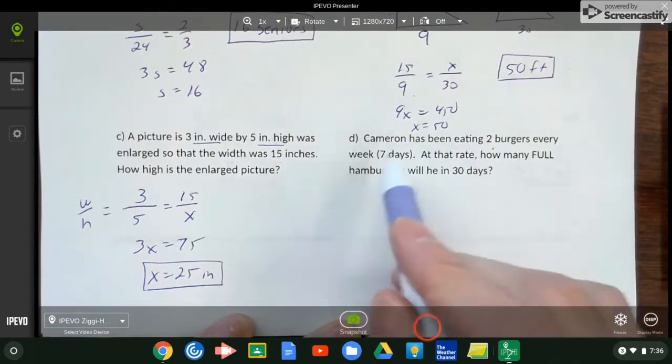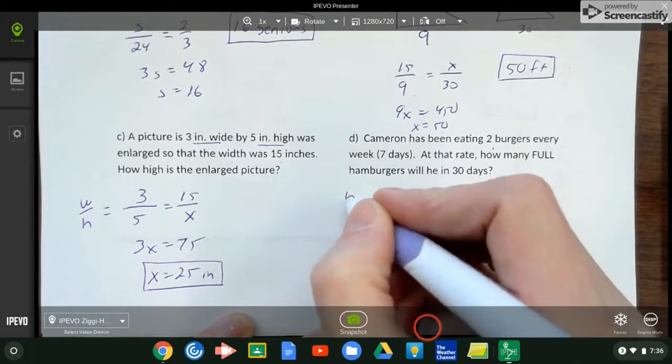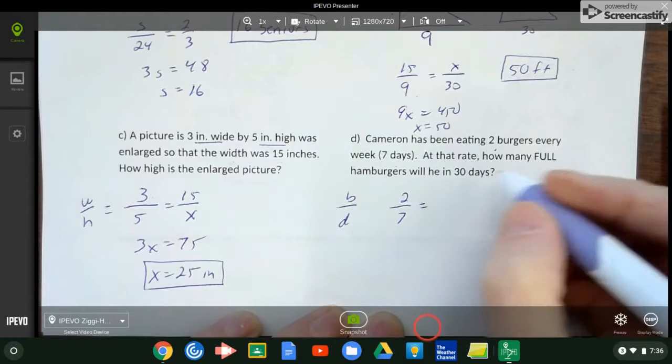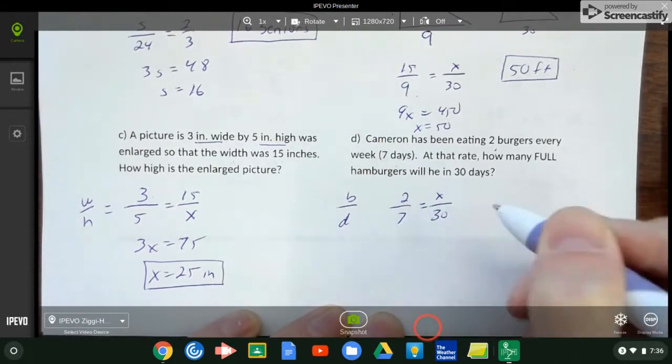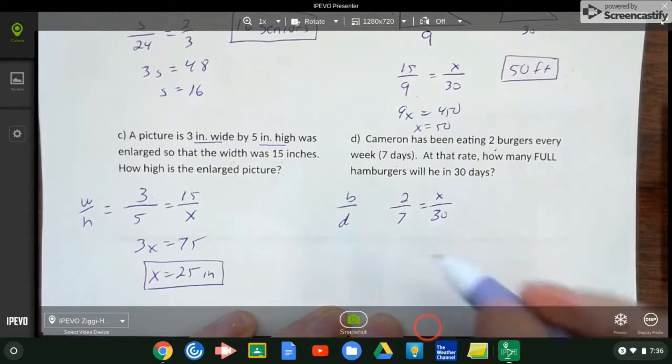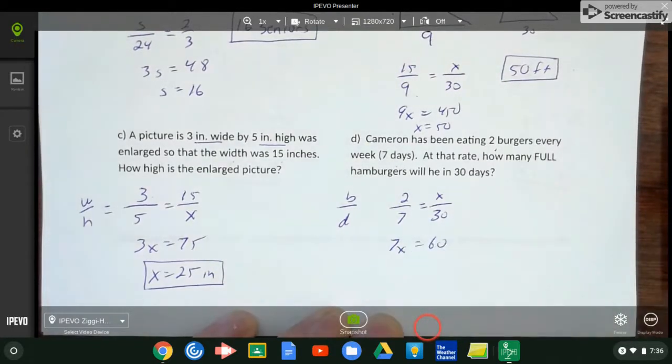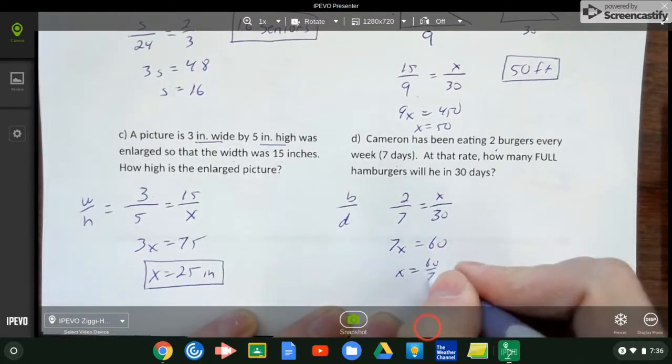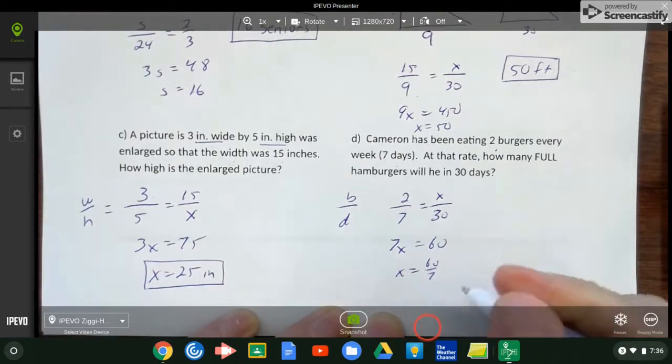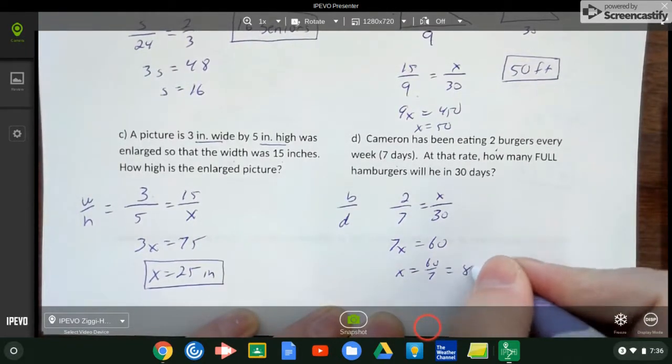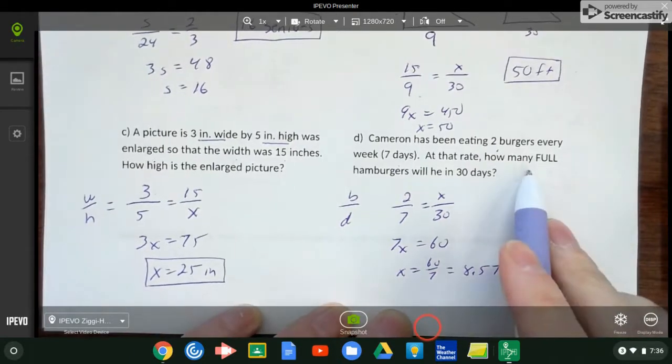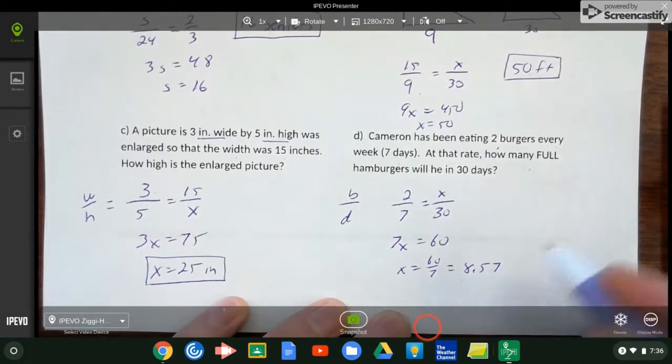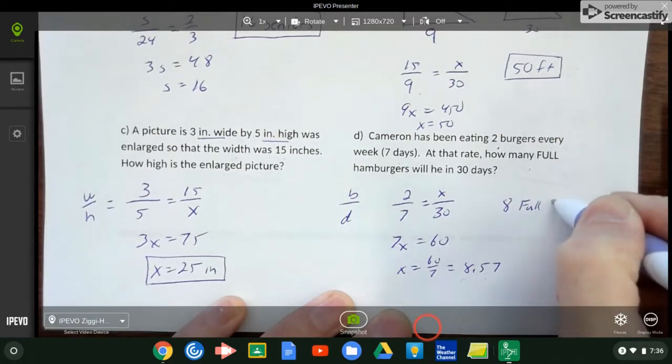Last one - this one can be tricky, so be careful with it. We're talking about two burgers every week, so two burgers every seven days, so burgers over days: two burgers in seven days. How many burgers will he eat in 30 days? Be careful that you're not doing this by week, that could make a difference. So 7x equals 60, so x equals 60 over 7, which if I change that to a decimal gives me 8.57. So how many full burgers? Well, he eats eight, just over eight and a half, so we haven't had nine full burgers. You don't round up - he eats eight full burgers.